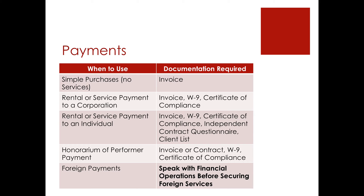If you are paying for a rental or service payment to a corporation, you would need an invoice from the corporation, the corporation's W-9, and a signed certificate of compliance. If you choose to use an individual for a rental or service payment, in addition to the invoice, W-9, and signed certificate of compliance, you would also need them to fill out an independent contractor questionnaire and a client list. All of these documents are available in the Dig Deeper section of this module.